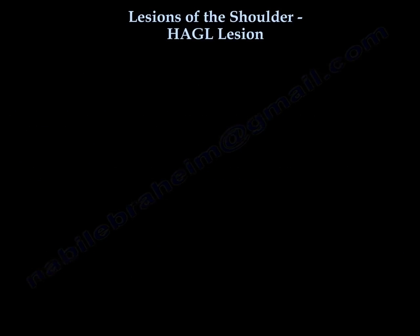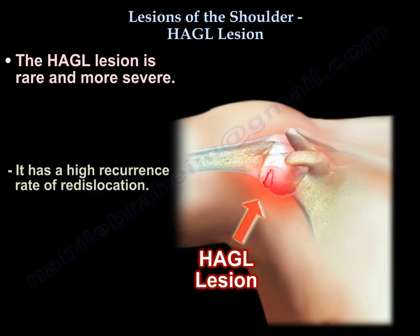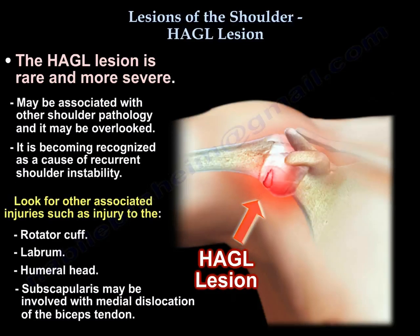The HAGL lesion is rare and more severe, and causes a high recurrence rate of re-dislocation. It may be associated with other shoulder pathology and may be overlooked. It is becoming recognized as a cause of recurrent shoulder instability. Look for other associated injuries such as the cuff, the labrum, and the humeral head.